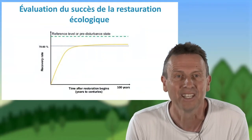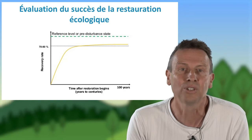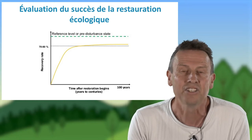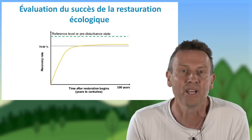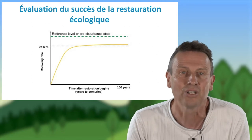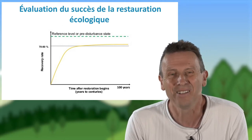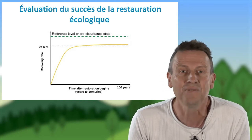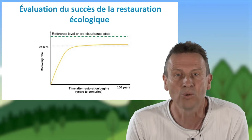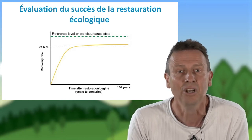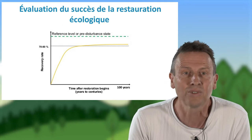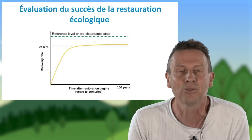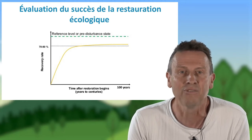Comment évaluer le succès de la restauration écologique ? Évaluer ce succès voudrait dire qu'on a été capable de remettre en place toutes les composantes de l'écosystème et toutes ses fonctions. Généralement, sur toutes les méta-analyses qui ont pu être faites, on n'atteint pas la restauration de l'intégralité de l'écosystème, mais un palier, différent selon les compartiments auxquels on s'est adressé. Dans le cadre de la restauration des zones humides, on estime qu'on a pu restaurer 70 à 80 % des populations d'oiseaux, des végétaux, etc., mais en aucun cas atteindre la référence qui existait avant les perturbations.